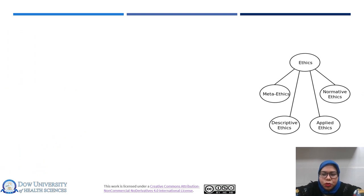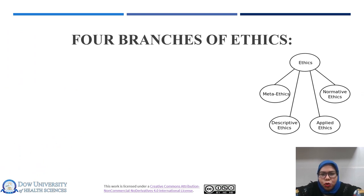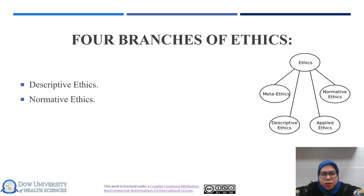What are the different branches of ethics? There are four branches of ethics: descriptive ethics, normative ethics, applied ethics, and metaethics.